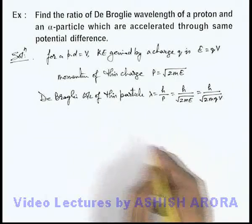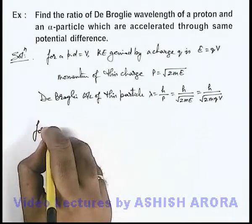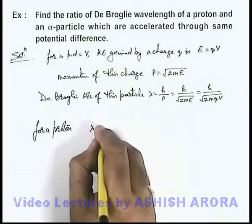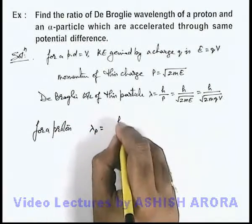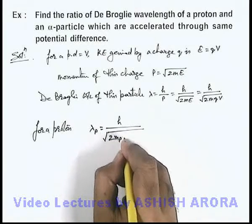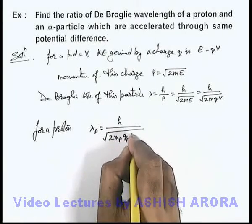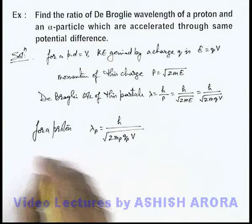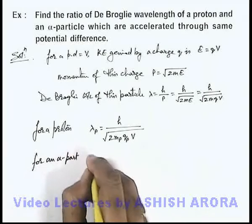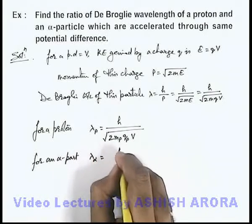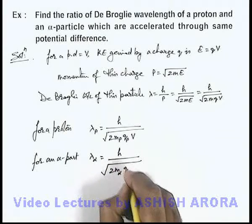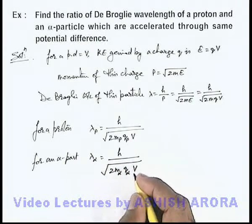Now, if we calculate for a proton, we can write lambda of proton—de Broglie wavelength of proton—as h over root of twice the mass of proton multiplied by charge of proton and the potential difference V. And if we talk about an alpha particle, lambda alpha can be given as h over root of twice the mass of alpha particle, charge of alpha particle, multiplied by V.